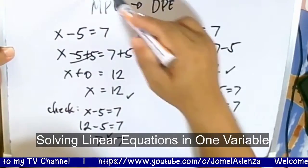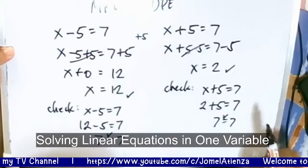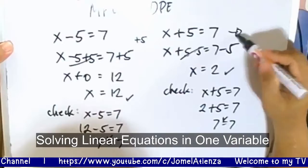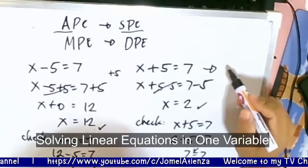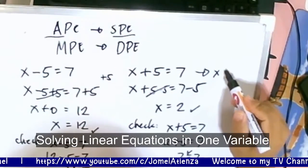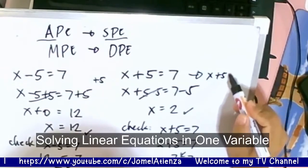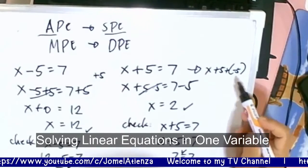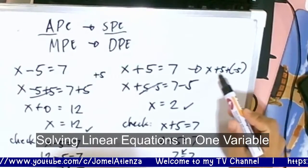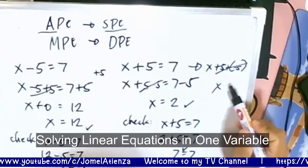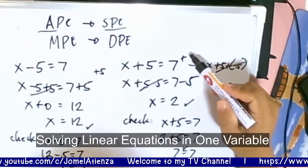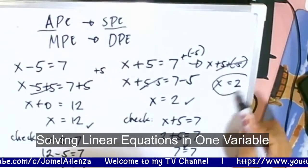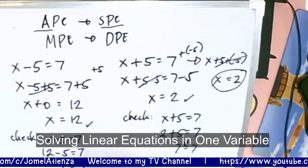Note that SPE and APE are really the same. With x plus 5, if we add negative 5 to both sides — that is the additive inverse — the result equals 0, and x equals 2 either way. The method may differ but the result is the same.